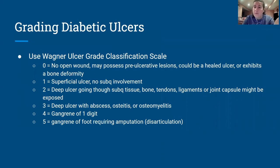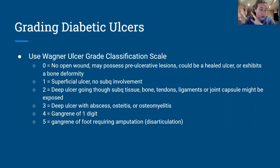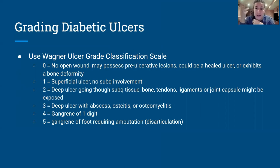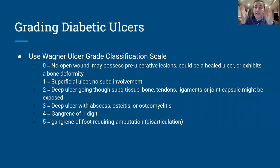The boards might ask you about the Wagner ulcer grade classification scale. This is used to grade diabetic ulcers, which are not completely synonymous with neuropathic ulcers. However, many of our patients are going to have diabetes along with their ulcer. The Wagner scale goes from zero to five.